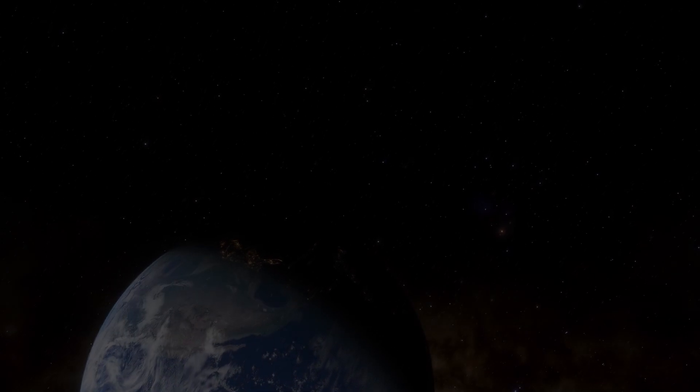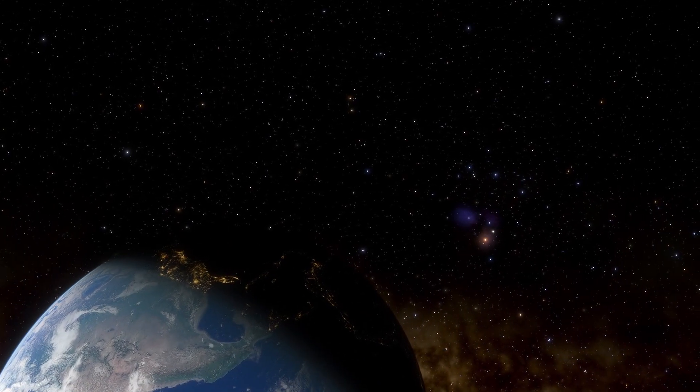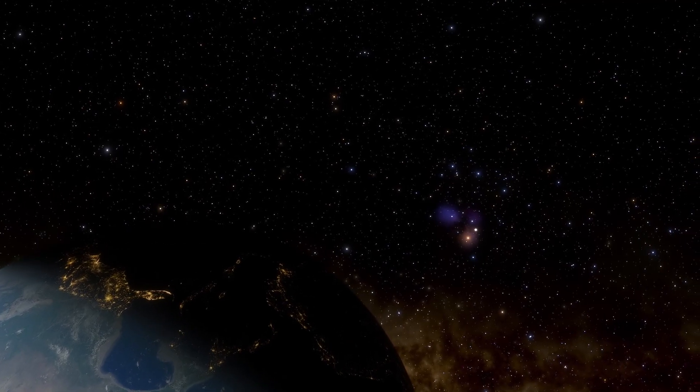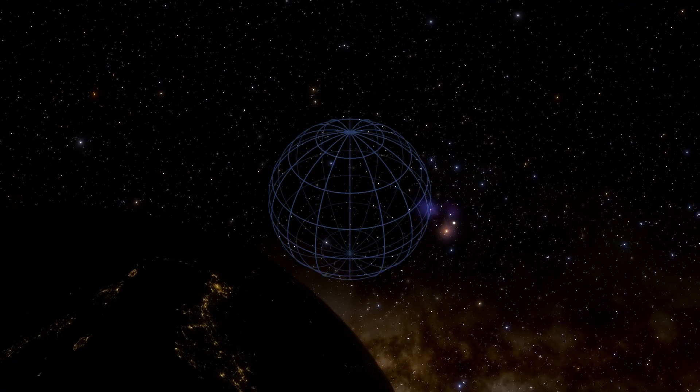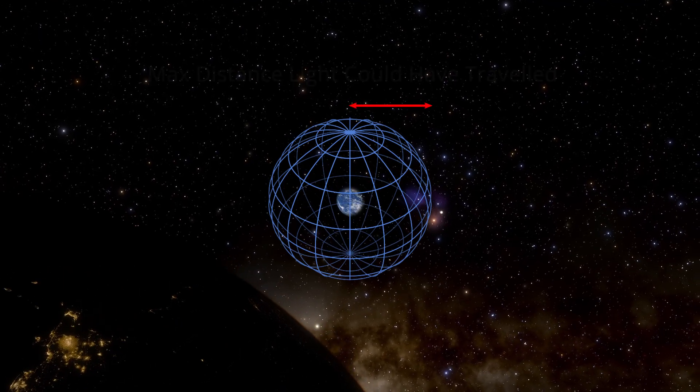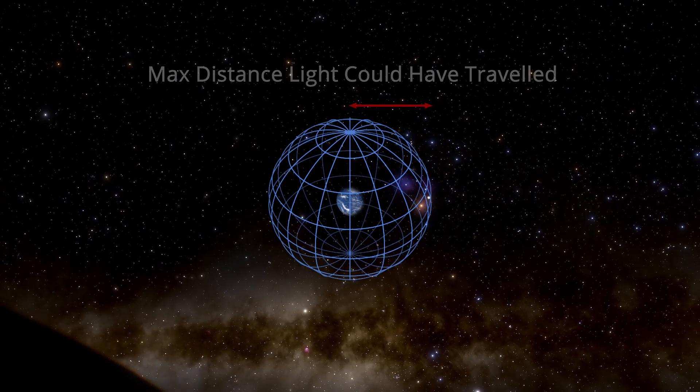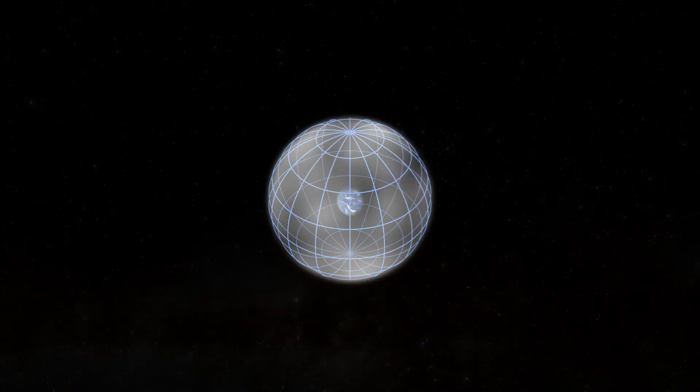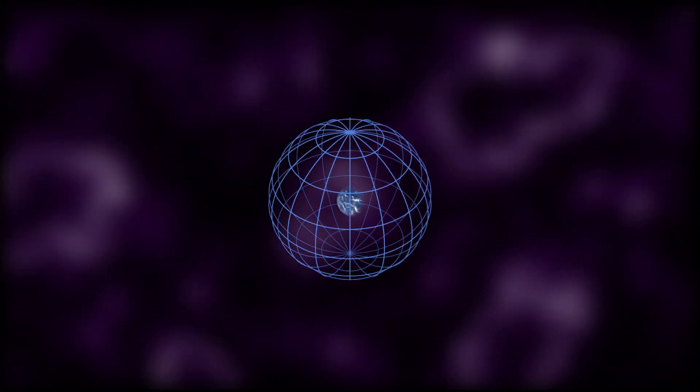First, it is perhaps best to define what we mean when we say the observable universe. This is the furthest distance we can see from Earth no matter which direction we look in the night sky. You can imagine it to be like a bubble of space-time in which the Earth is at the center and the radius is the maximum distance light could have traveled since the universe began. Anything inside this bubble is observable to us and anything outside of it is not, because light has not had enough time to reach us.